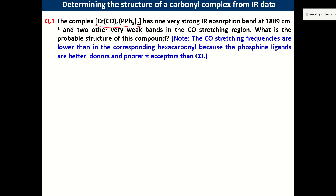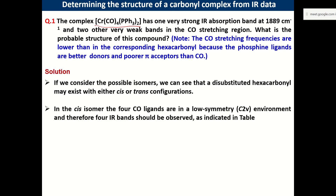In the presence of phosphine ligands, which are better donors and poorer pi acceptors, the metal will donate most of its back-donation to CO into the CO pi* anti-bonding orbital. The CO bonds become weaker, so you can expect a decrease in the stretching frequency. Since the formula is M(CO)₄, there is a possibility of cis and trans configurations.